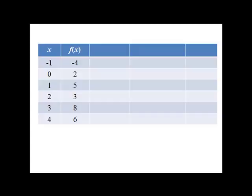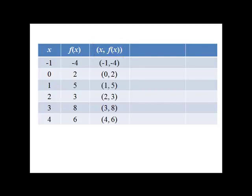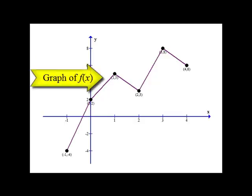This short little video is going to discuss vertical shifts and how they look graphically. Let's say we have a function f of x with inputs in the x column and outputs in the f of x column. If we wanted to graph f of x, we could think of this as a set of ordered pairs, x comma f of x. We write them as ordered pairs and then we could plot them and we'd get the following graph. We can see our points plotted on there.